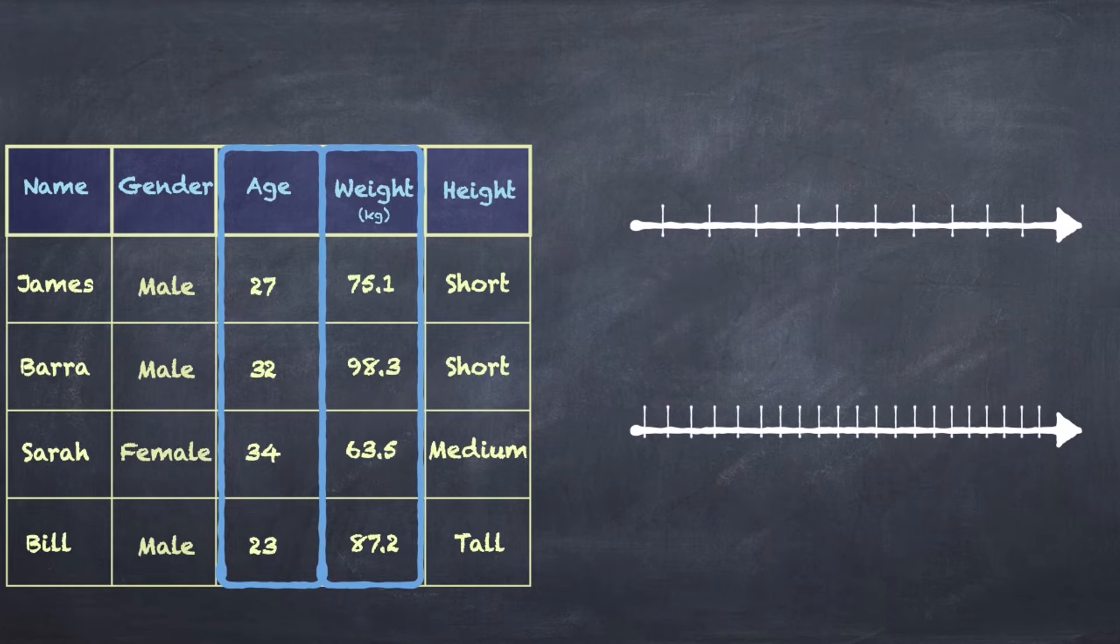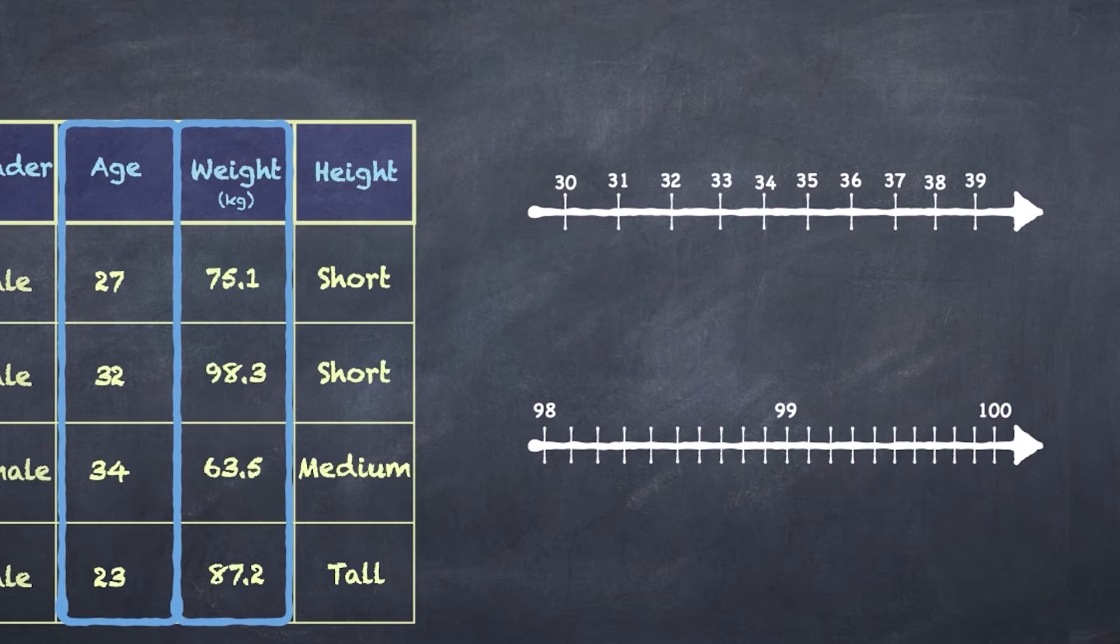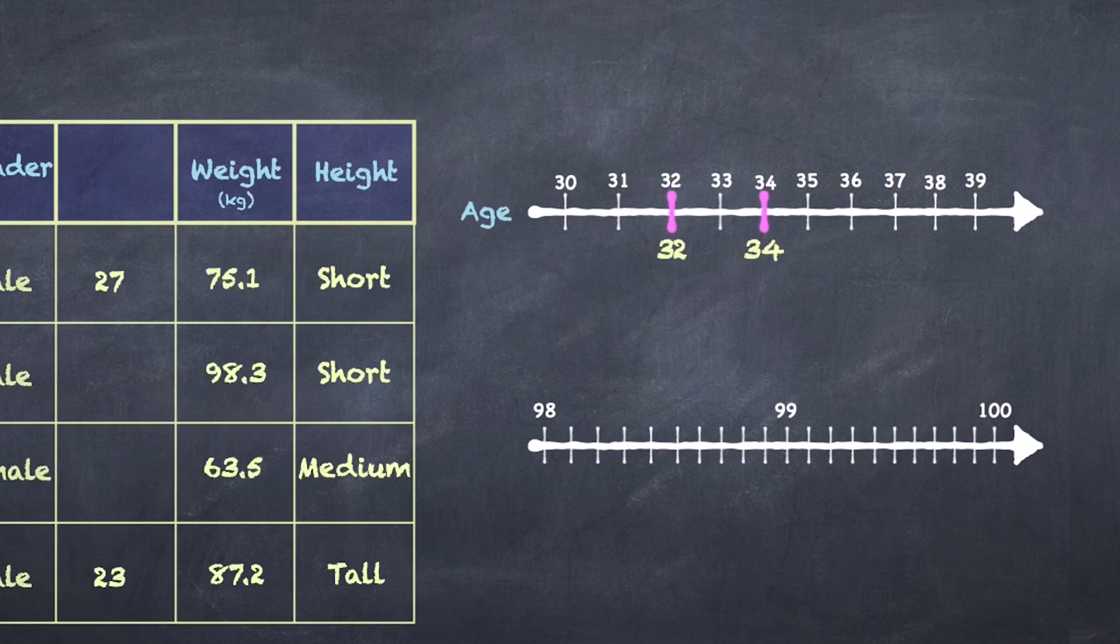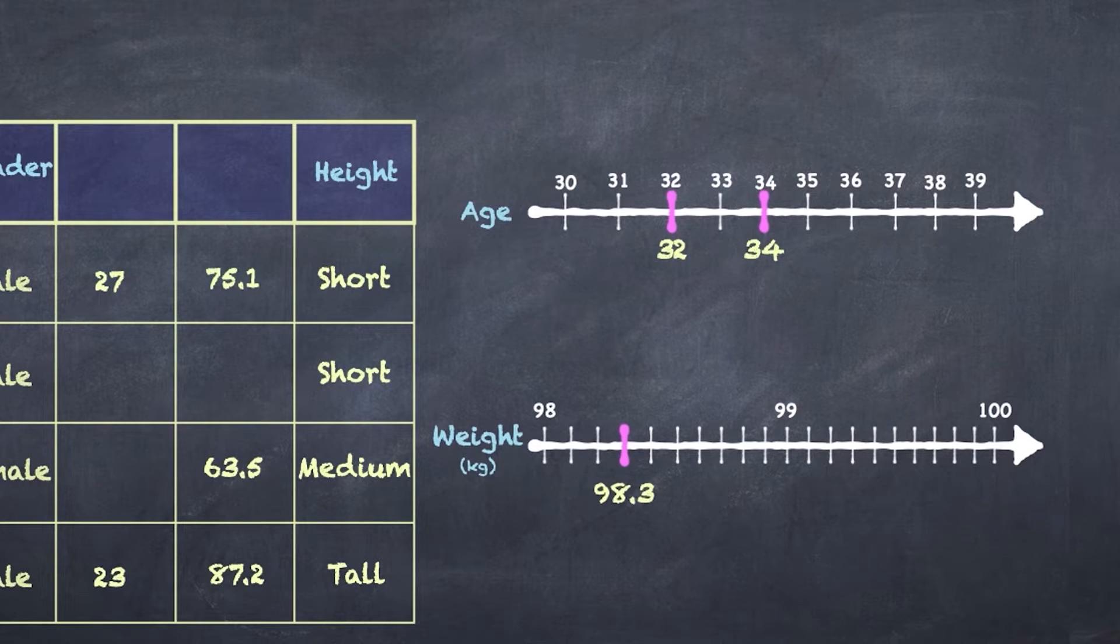Now, let's talk about the two types of numeric variables. These are numbers. They fall by definition on a number line. But they can fall on that number line in two different ways. They can be discrete or continuous. Let's talk about age. Age is typically given as a discrete variable. In other words, each observation falls definitively on a value on the integer number line. 32, 33, 34, etc. Weight, by contrast, falls on any number, including fractions, between two integers. So, in this example, Barra is 98.3 kilograms. But now we want to talk about how it is that we're going to describe all of these variables.